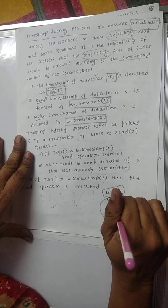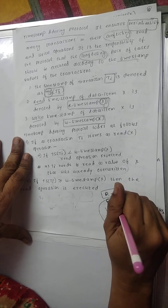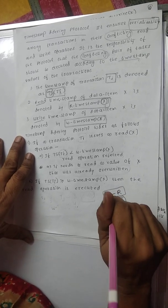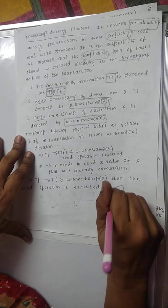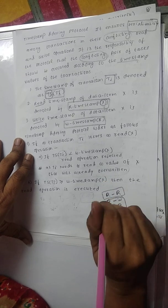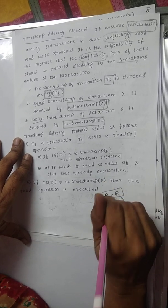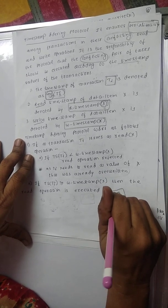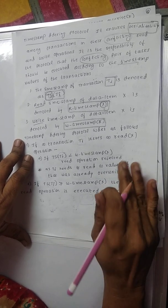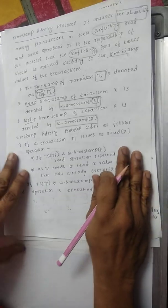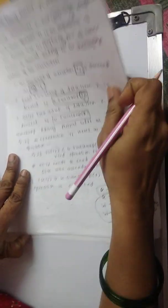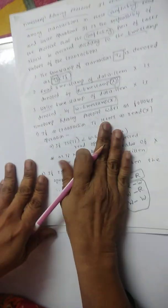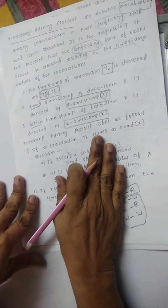Conflicting pairs of tasks can be identified, timestamps assigned, and transactions executed so that serializability can be maintained. Let us now see the timestamp protocol rules.